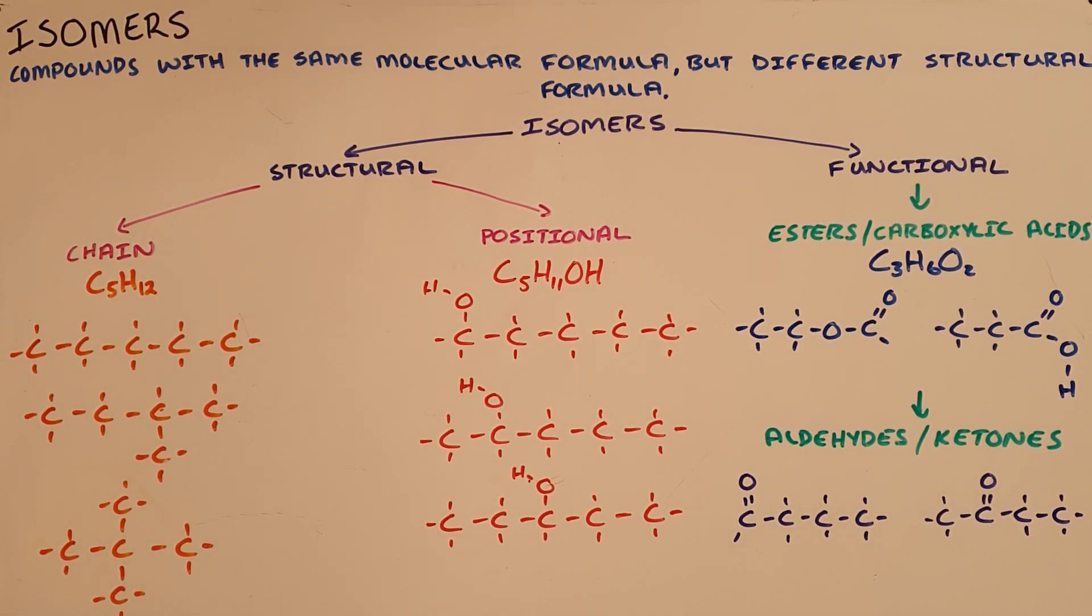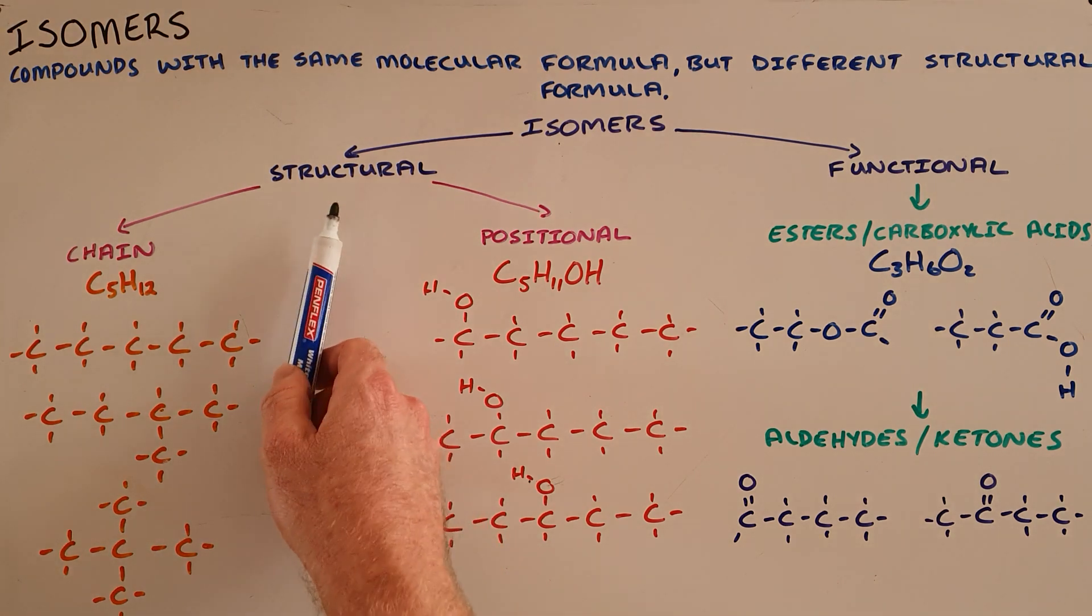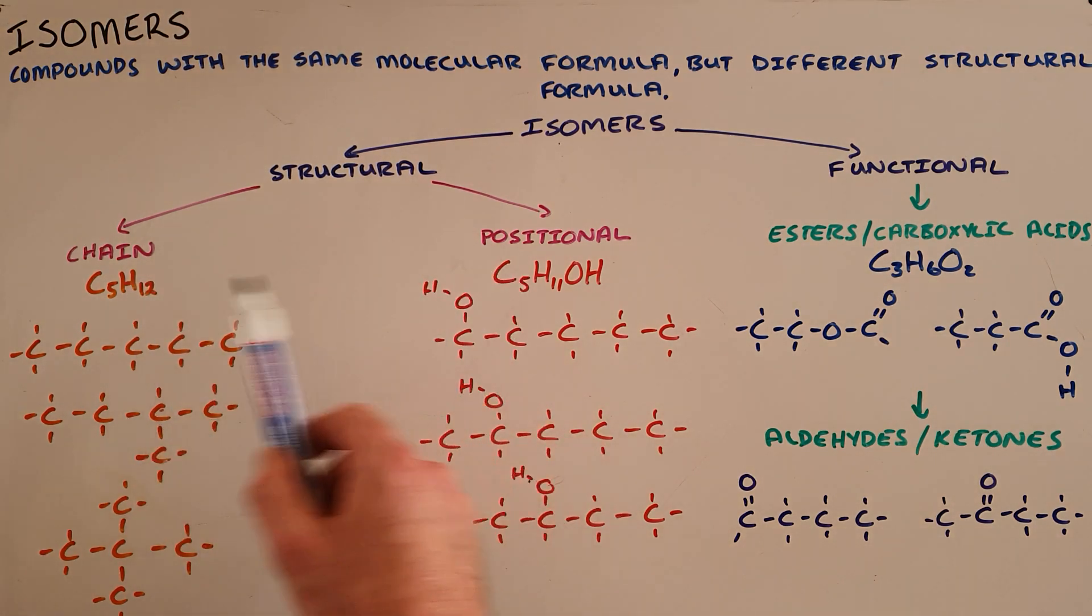Isomers are compounds with the same molecular formula but different structural formula. We get largely speaking two types of isomers: structural isomers and functional isomers. Under structural isomers we get two types, called chain isomers and positional isomers.